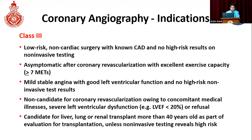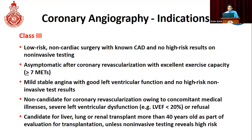One controversial point is whether candidates for liver, lung, or renal transplantation should routinely undergo coronary angiography. Various transplant programs include this as a routine investigation — for example, after age 50 or with more than 10 years of diabetes — but the guidelines say it should not be done routinely even before these transplant surgeries.